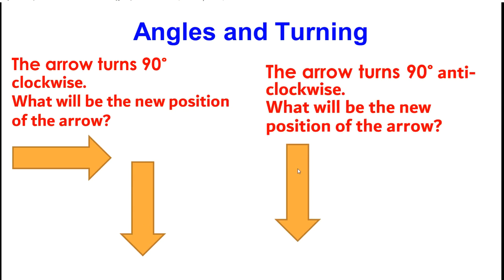Here's an arrow again. This time the arrow is going to turn 90 degrees anticlockwise. What will be the new position of the arrow? Good job. It will be pointing towards the right.